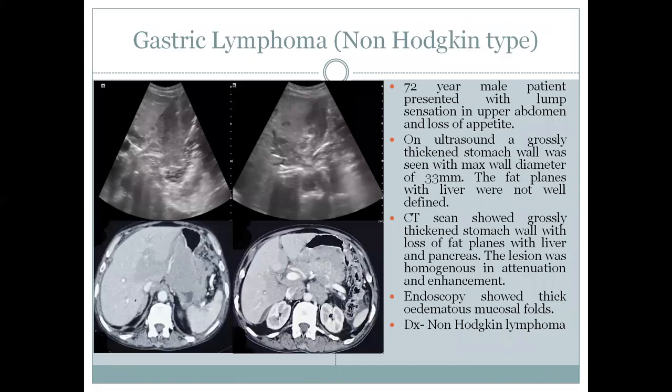A 72-year-old male patient presented with a lump sensation in the upper abdomen. Ultrasound showed a globularly thickened stomach wall with maximum diameter of 30 mm and loss of fat planes with the liver. CT scan showed globular thickening with a non-homogeneous mass.